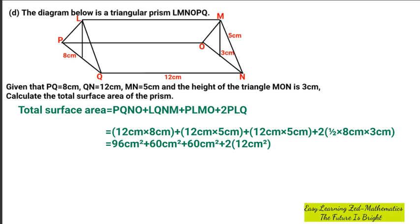So 96 plus 60 will give us 156 cm squared plus 60 cm squared. When we multiply 2 by 12 will give us 24, so it's going to be plus 24 cm squared.